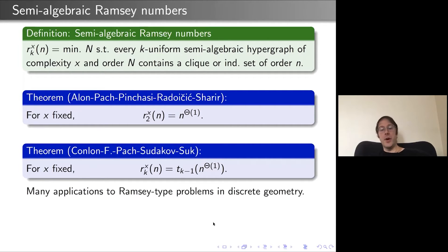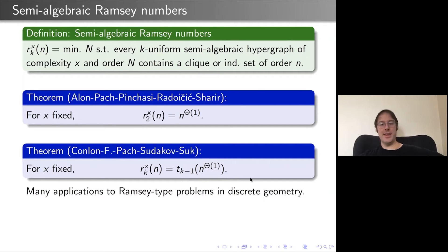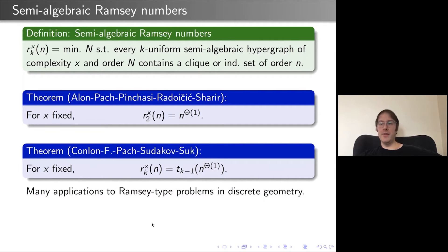This has many applications to Ramsey type problems in discrete geometry, with both lower and upper bounds shown to be tight. The key thing is one can extend the techniques of Erdős-Hajnal-Rado to semi-algebraic hypergraphs. These hypergraphs of bounded complexity are all examples of bounded VC dimension hypergraphs, which we'll get into later.